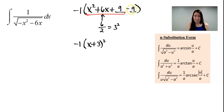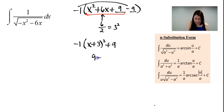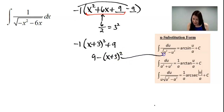Then I have this minus 9, but if you distribute back in the negative 1, you can see that's actually a plus 9. I'm going to rewrite this by flipping it around so it looks like 9 minus x plus 3 squared. I do that because it'll now look like the arc sine form when I put it back under the radical.